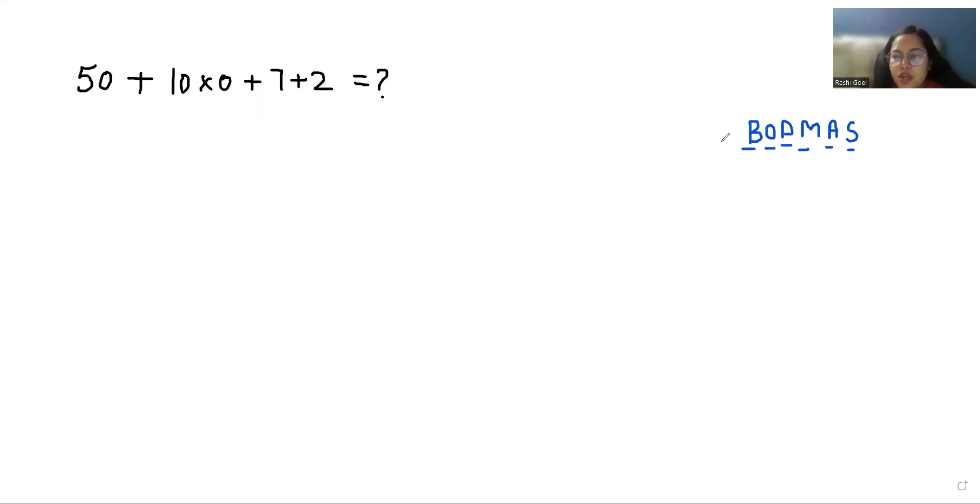In this simplification question, we have only two signs: multiplication and addition. So we are going to give priority to multiplication first. 50 plus, the multiplication sign comes between these two numbers, 10 times 0 is 0 plus 7 plus 2.